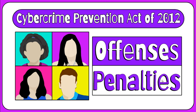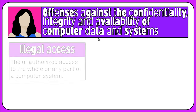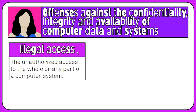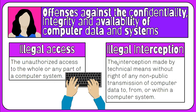The first core category of cybercrime refers to the offenses against the confidentiality, integrity, and availability of computer data and systems. Starting with illegal access, which refers to unauthorized access to the whole or any part of a computer system. Another offense, called illegal interception, is the interception made by technical means without right of any non-public transmission of computer data to, from, or within a computer system.